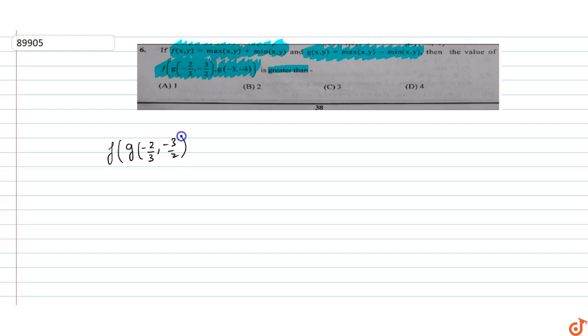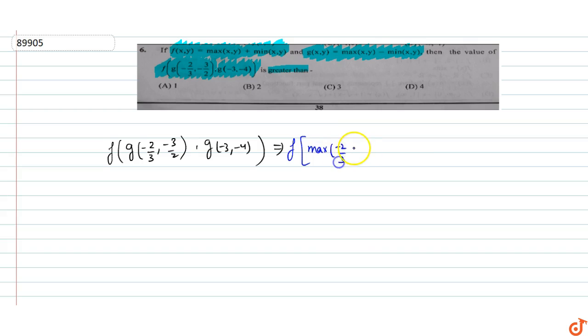So we have to evaluate f of g of minus 2 by 3, minus 3 by 2, comma g of minus 3, minus 4. We apply the definition of g: g of x,y equals maximum of x,y minus minimum of x,y.